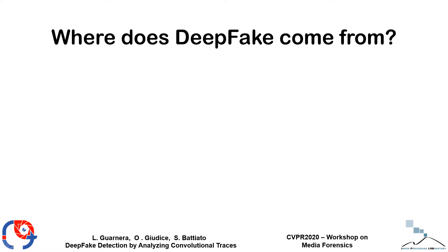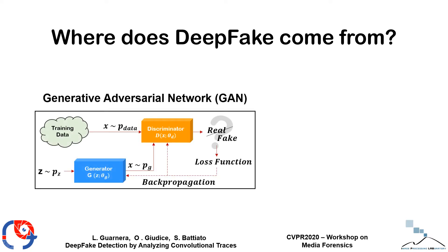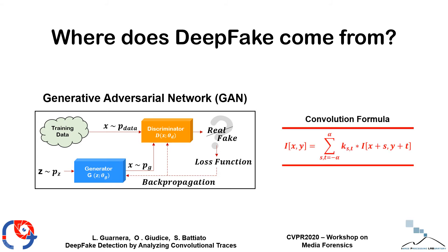To understand how to develop a deepfake detection technique, we need to know where deepfakes come from. Specifically, they are generated by GANs, which are convolutional neural networks, on which the basic element is the convolutional operator, which is guided by the kernel. Some of the most common kernel sizes are reported in the slide: 3, 4, 5, 7.